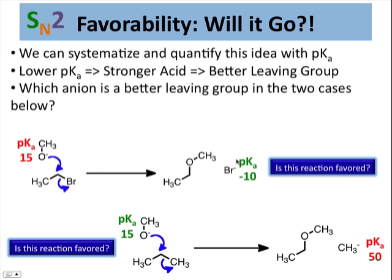We can systemize and quantify the idea that acidity is proportional to leaving group ability using pKa. We know pKa as a number that reflects the acidity of a functional group or a molecule. The lower the pKa, the more acidic. The more acidic, the better the leaving group. When comparing two reactions or two sides of the same reaction, the better leaving group will be the one whose conjugate acid has a lower pKa.